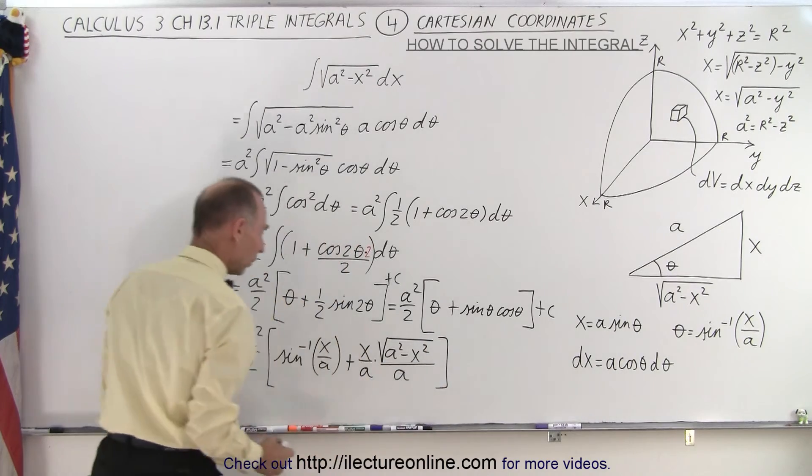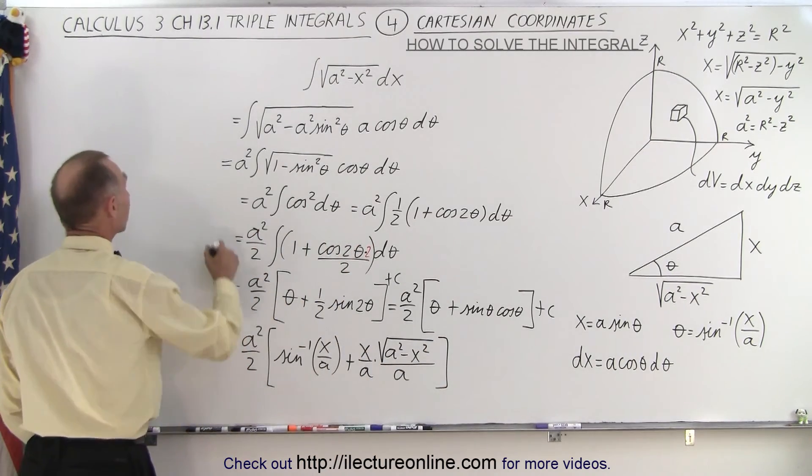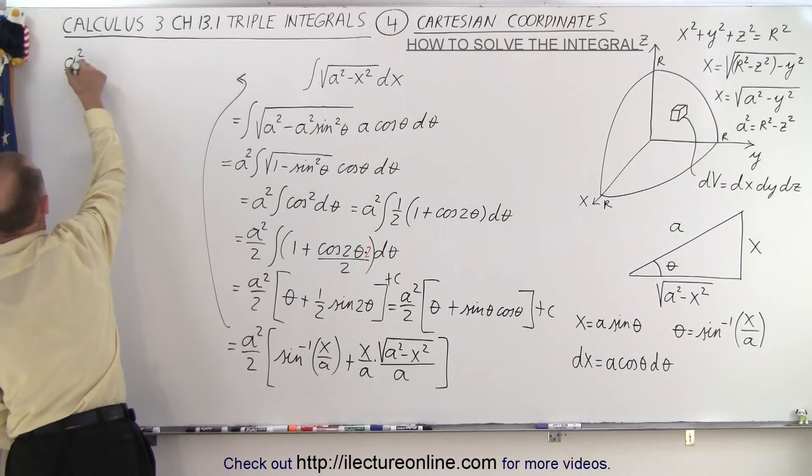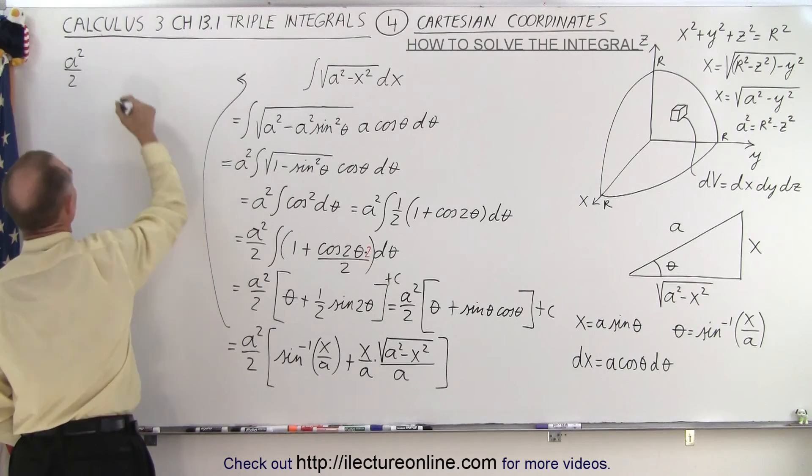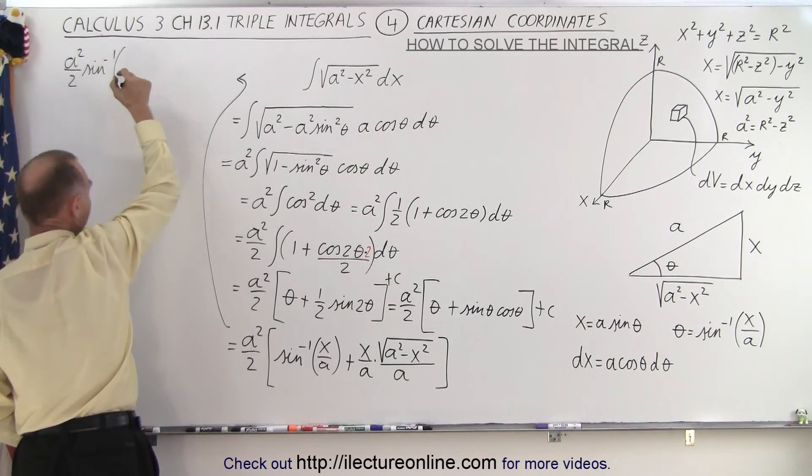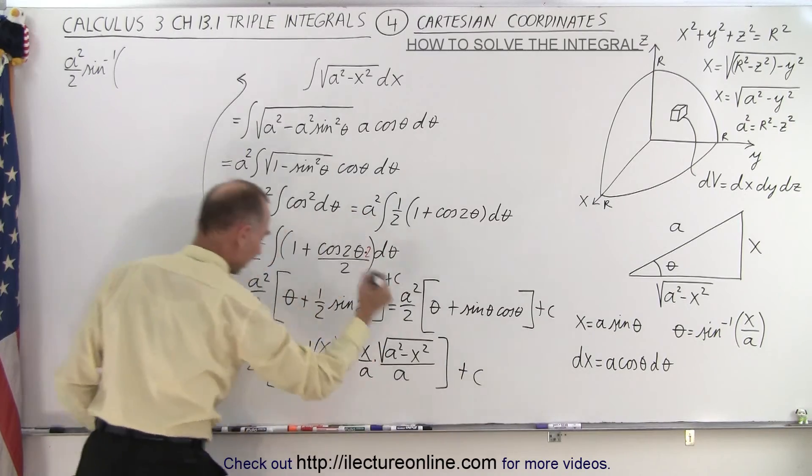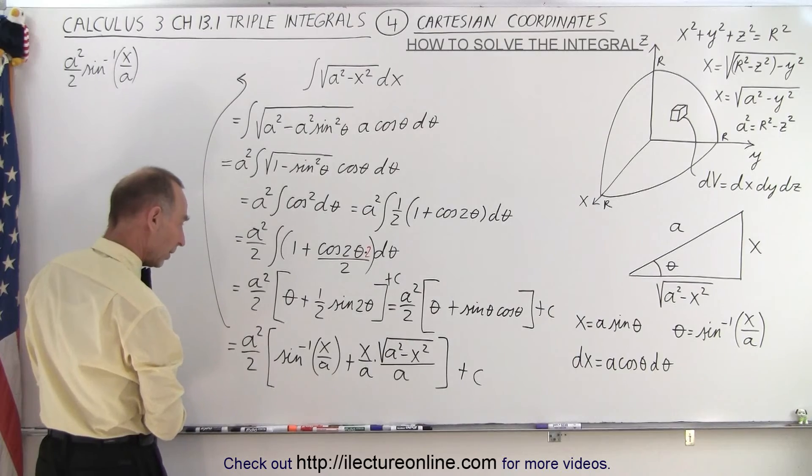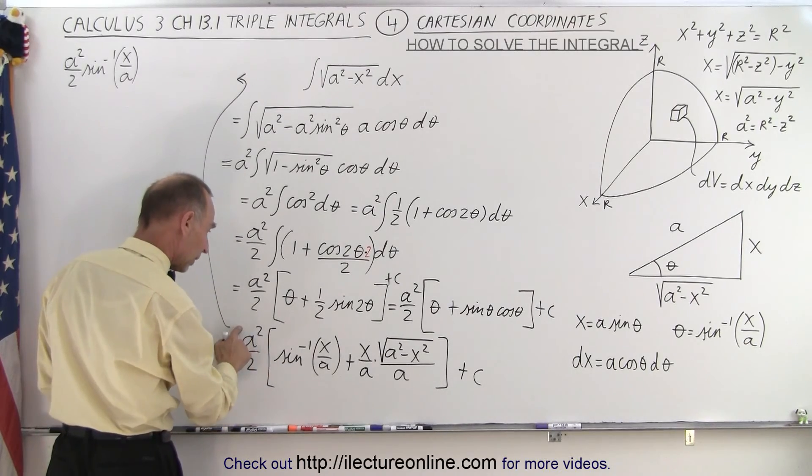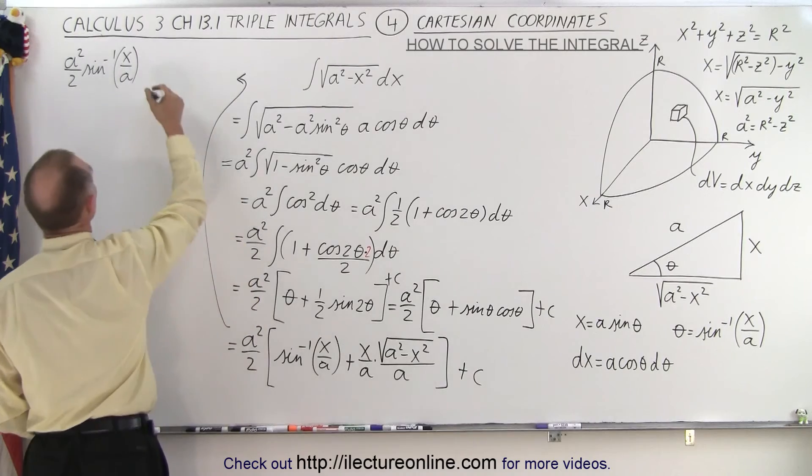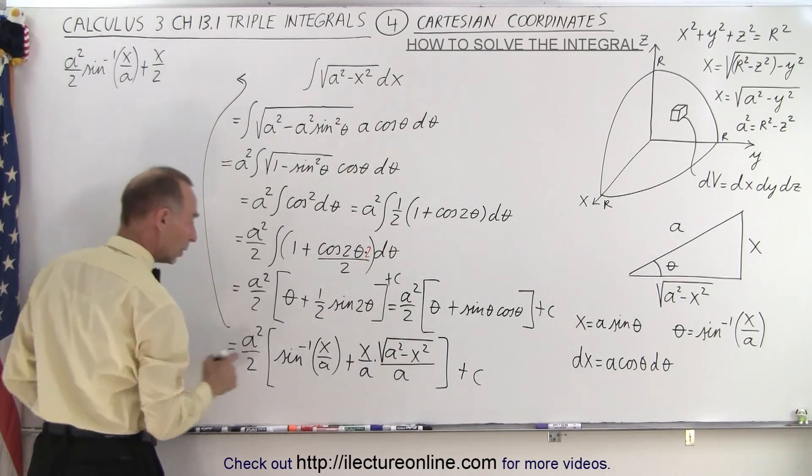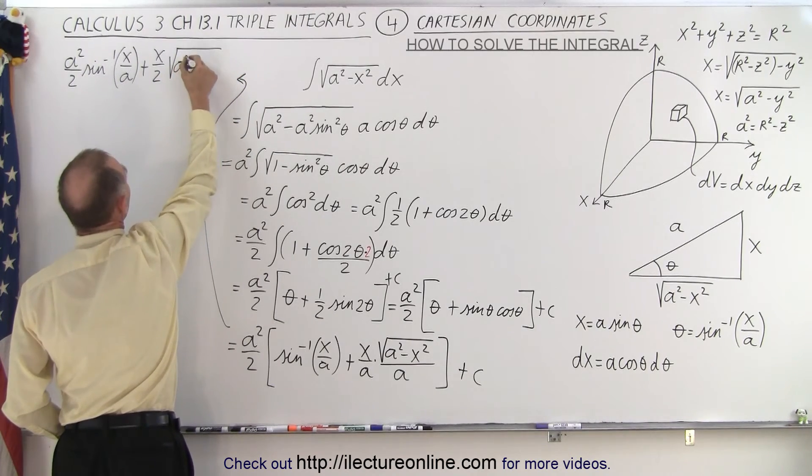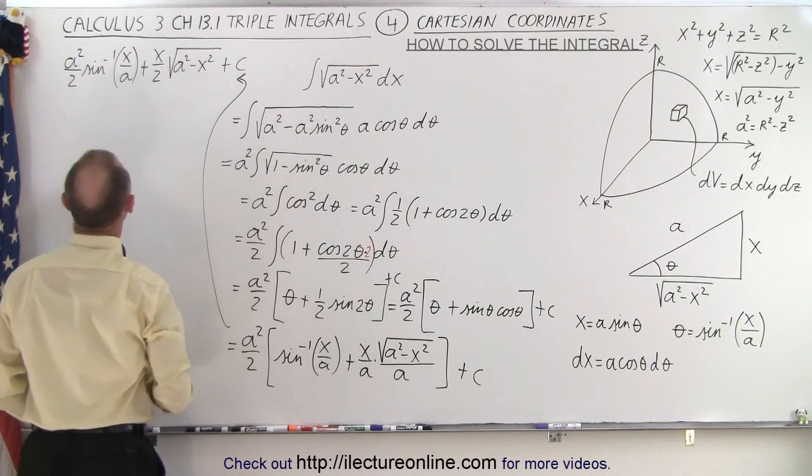And I think we're now ready to write it in its final format. So that would be, for the first term, we get a squared over 2 times the inverse sine of x over a, plus—now we have an a squared here and an a squared there that cancels out. So we end up with x over 2, plus x over 2, times the square root of a squared minus x squared, plus a constant of integration.